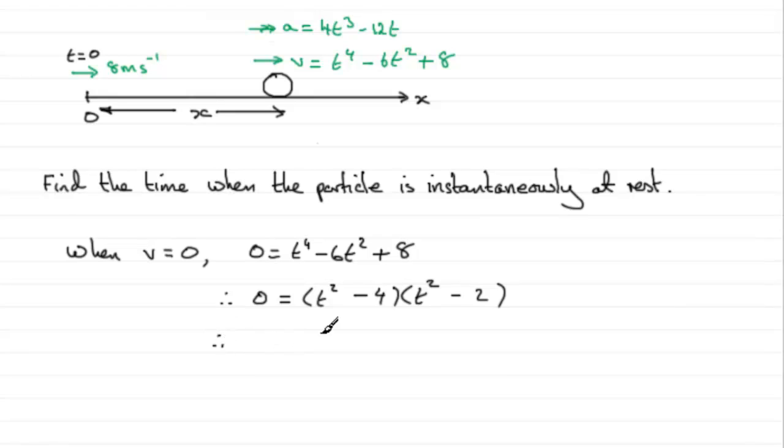So in the usual way, each of these factors should equal 0. We've got t^2 minus 4 must equal 0, or the other factor, t^2 minus 2 must equal 0. So t^2 equals 4, or t^2 must equal 2.